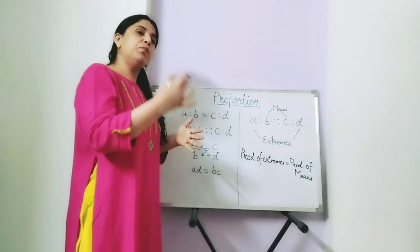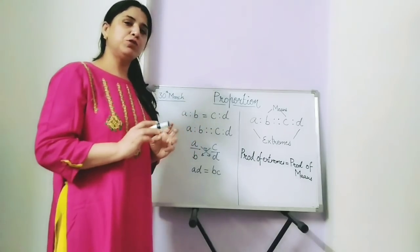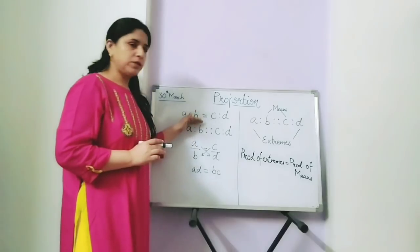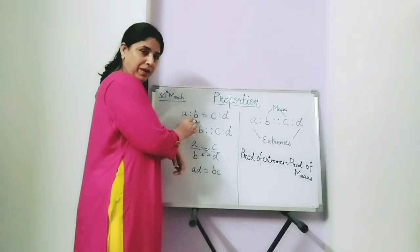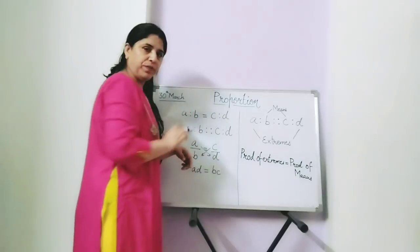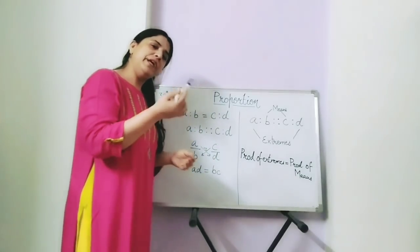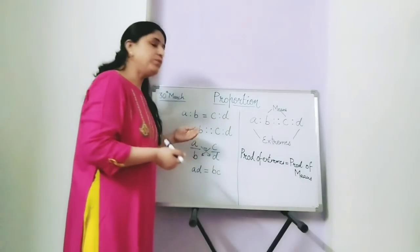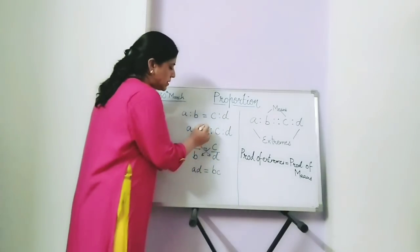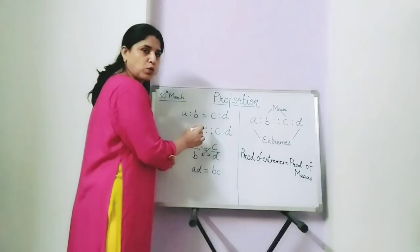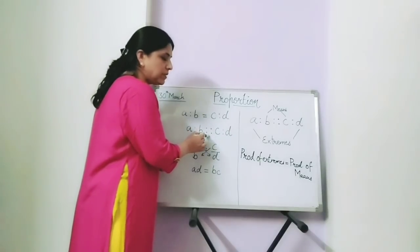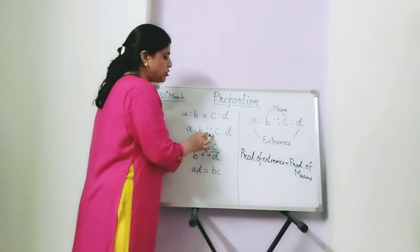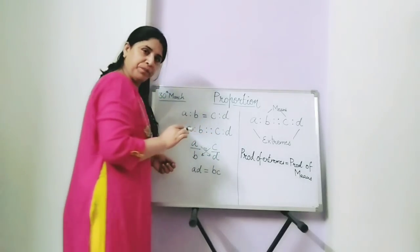When something is in proportion — you have heard this word in English too — but in math, when two ratios, like we have four terms A is to B and C is to D, and when those two ratios are equal, we say that they are in proportion. This is the sign: we put four dots in a square shape to represent proportion. We say that A ratio B is proportional to C ratio D.